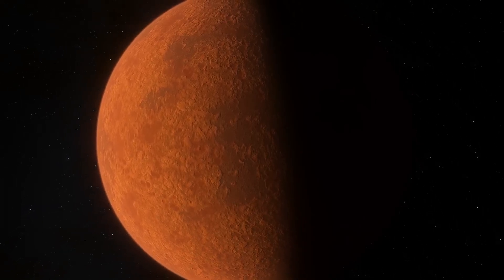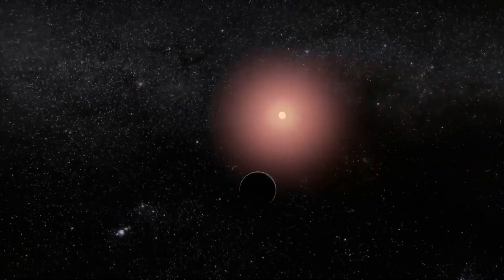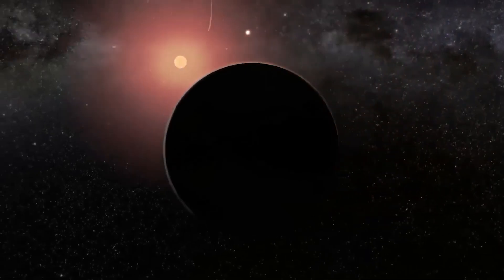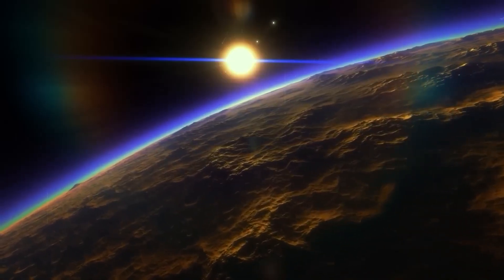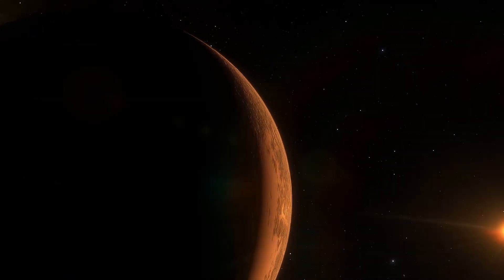Proxima b, orbiting the closest star to our solar system, has long captured the imagination of scientists and dreamers alike. But while its illuminated side has been a topic of intense study, its dark side, permanently locked in shadow, remained an enigma.